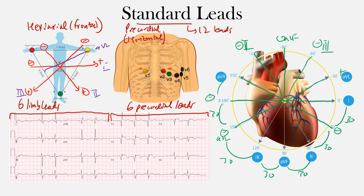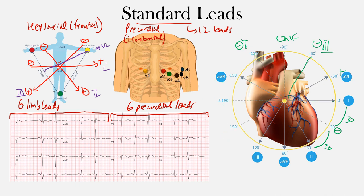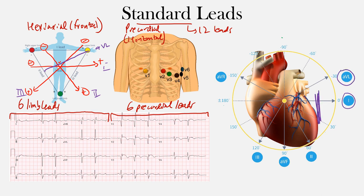When we look at the standard 12-lead EKG, these are considered the lateral leads. The lateral limb leads are AVL and lead one, because they're essentially sitting on the lateral portion of the heart. AVL is often considered a high lateral lead, giving a high lateral view. On the standard 12-lead, here's lead one and here's lead AVL — the lateral limb leads in the frontal plane.